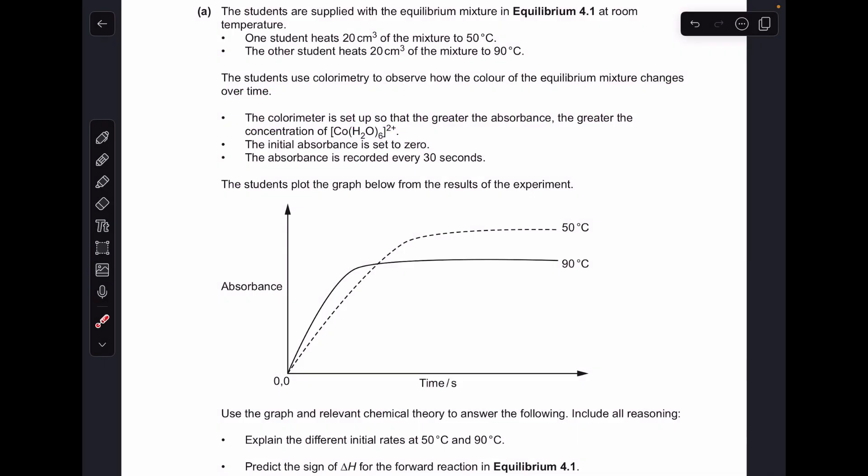So we'll start by explaining the different initial rates at the two temperatures. Initial rate is the rate at the start of the reaction, so time equals zero. You can see that the higher temperature, the 90 degree curve, has got a higher gradient than the dotted line, the 50 degrees curve.